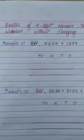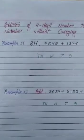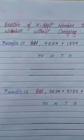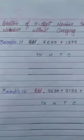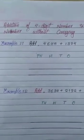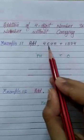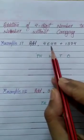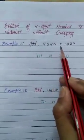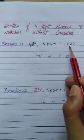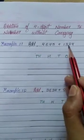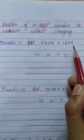Let's see some examples. Example 1: In this example, we have to add 4,645 and 1,324.